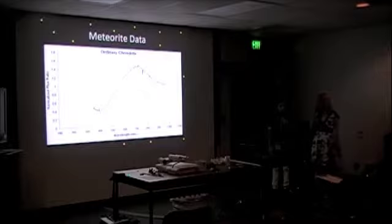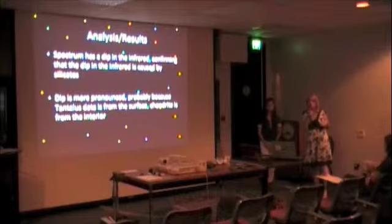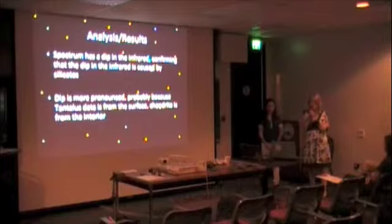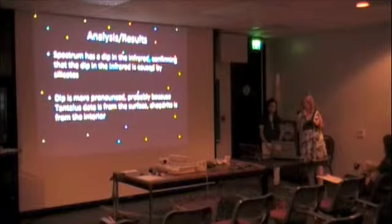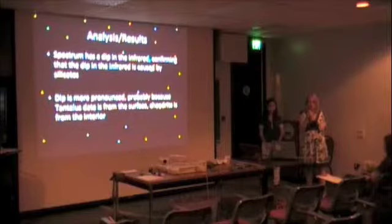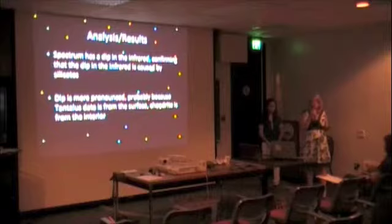The results confirm that the dip in the infrared is caused by silicates. The dip is more pronounced in the meteorite, probably because Tantalus's data is from the surface while the chondrite sample is from the interior — we took a slice of one of the meteorites and tested the inside of the rock.